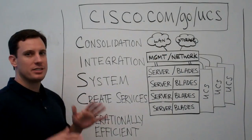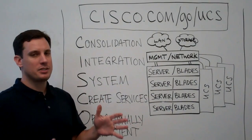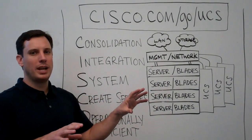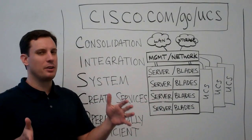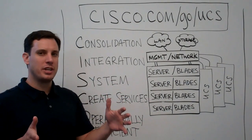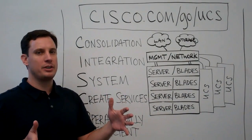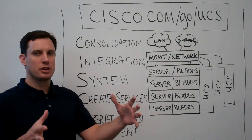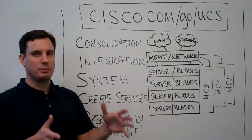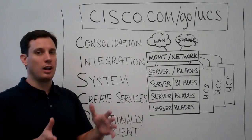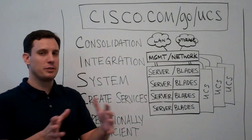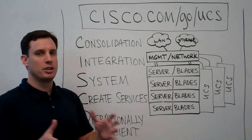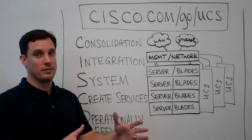Third, UCS is a system. It's not pieces and parts, it's not individual blades — it's a system. And what this allows the operational teams within a service provider to do is to look at that as a complete system, build their services around this system, and simplify their overall operations, ultimately getting services faster to market for their customers, and delivering more efficient, more consistent services.